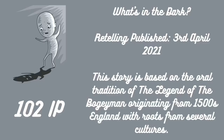Number 5: in the 5th spot with 102 interest points we have my darkest story yet — What's in the Dark? Published on the 3rd of April 2021 and based on The Legend of the Boogeyman, originating from 1500s England with roots from several cultures. This story verges on almost being a spooky retelling, which I plan to make its own series come October, in place of my 31 Stories of October challenge which I've completed annually up until this year. It almost lays the groundwork for spooky stories to come. It's definitely not for the faint of heart, but if you enjoy a nice horror story, this one is for you.